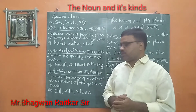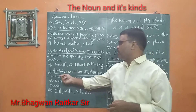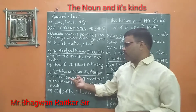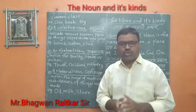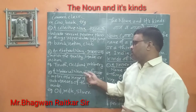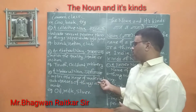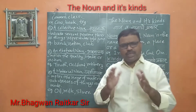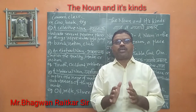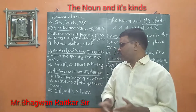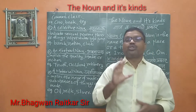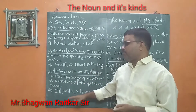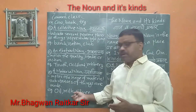And now, type number 5 — the last type: material noun. It implies the name of the substances that things are made of. It implies the name of the material. For example, oil, milk.